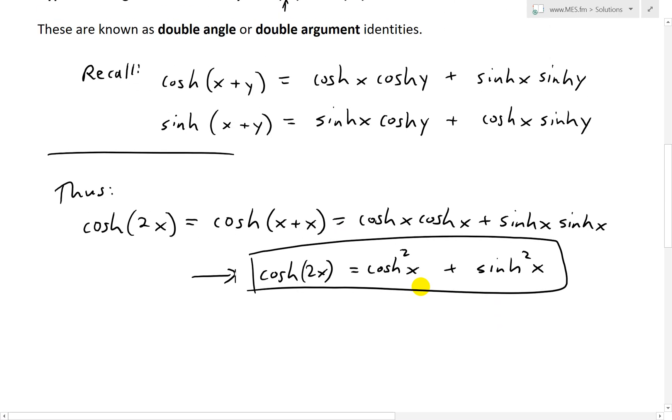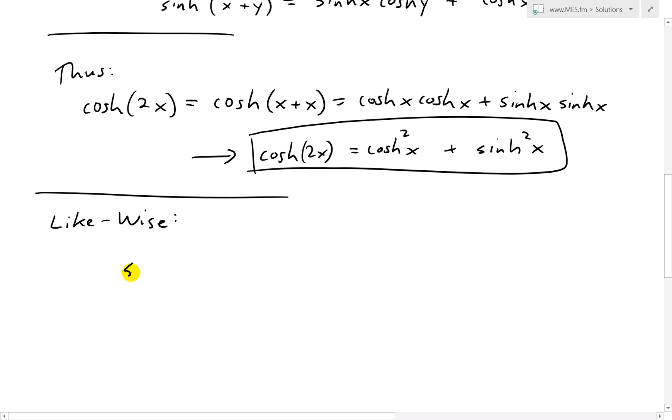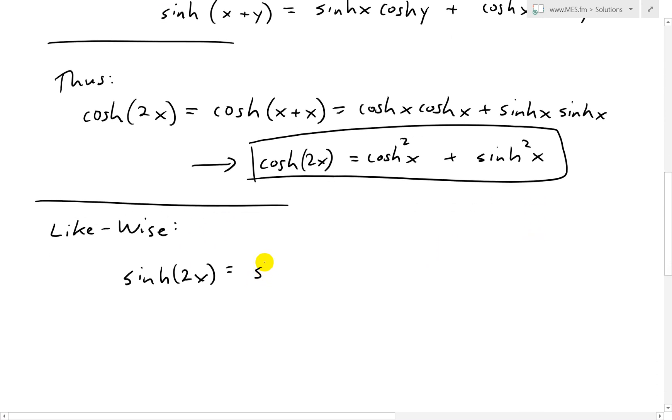And now likewise for sinh, sinh is going to be, so I'll write thus, so I'll just make another line, and write likewise. So likewise for sinh, we have sinh 2x equals to, and now we have it written like that. So sinh x, this is the same thing as writing sinh x plus x.